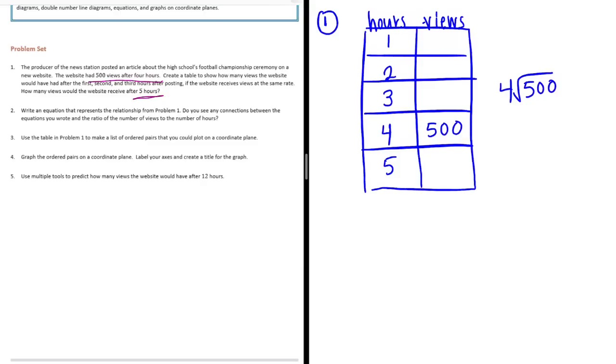So four goes into five one time, one times four is four, subtract and get one, bring down the zero. Four goes into 10 two times, two times four is eight, subtract, bring down the zero, and four goes into 20 five times. Five times four is 20, we get nothing. So 500 divided by four is 125, so in one hour there would be 125 views.